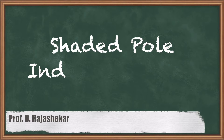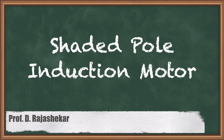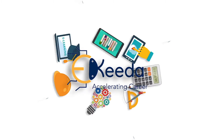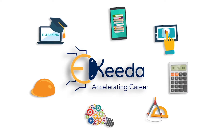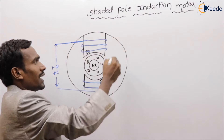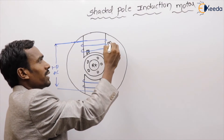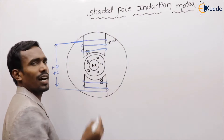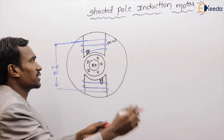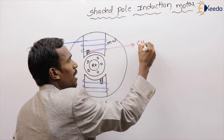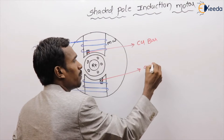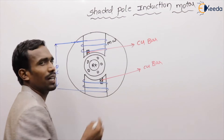Hi friends, in this video we are going to discuss about the shaded pole induction motor. This is the main winding and this is the rotor. Generally these are the shaded rings or shaded bars or copper bars — the shaded rings are copper bars. These are the two copper bars we are using here.